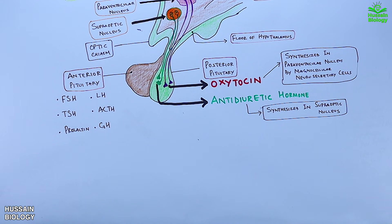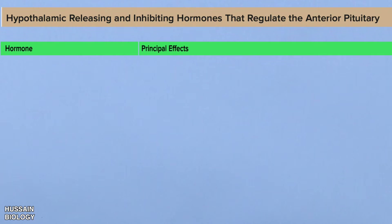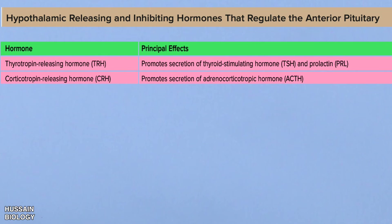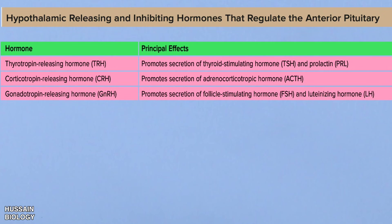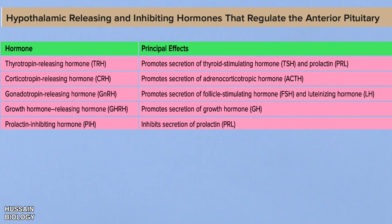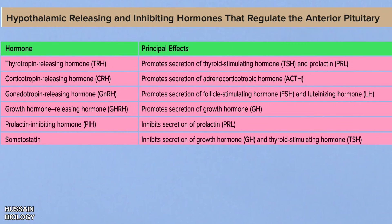The anterior pituitary is under the control of hypothalamic releasing and inhibiting hormones. The thyrotropin releasing hormone (TRH) promotes secretion of TSH and prolactin. Corticotropin releasing hormone (CRH) promotes secretion of ACTH. Gonadotropin releasing hormone (GnRH) promotes secretion of FSH and LH. Growth hormone releasing hormone (GHRH) promotes secretion of growth hormone. Prolactin inhibiting hormone inhibits prolactin secretion. Finally, somatostatin inhibits secretion of growth hormone and thyroid stimulating hormone from the pituitary.